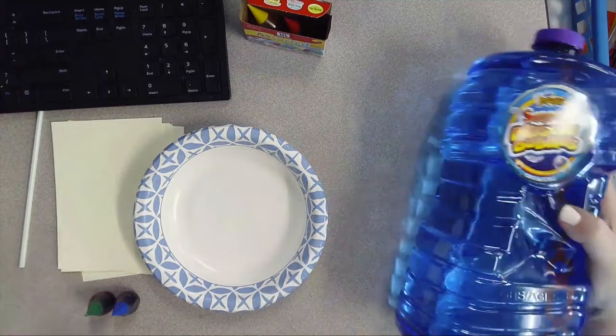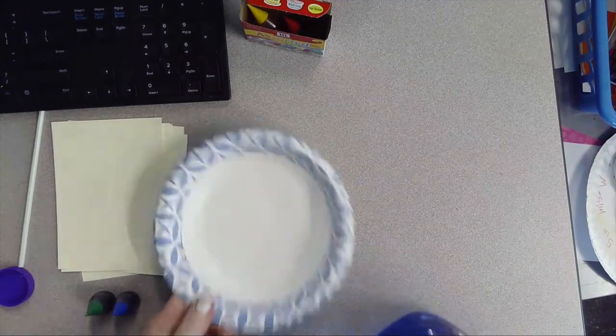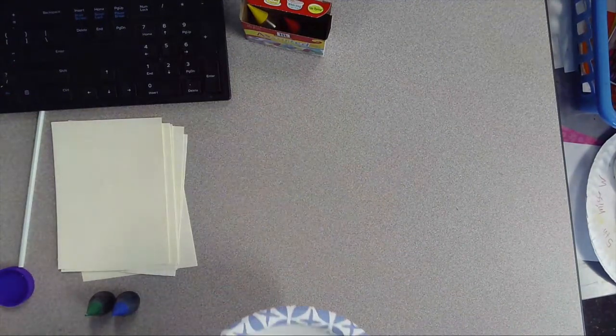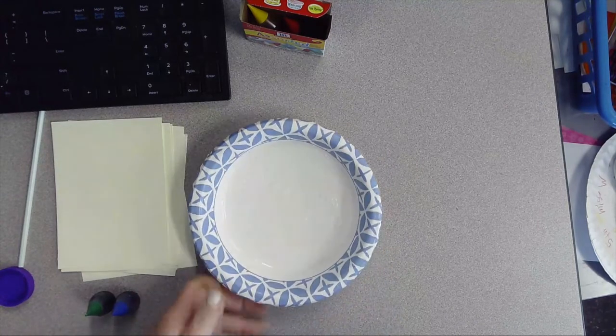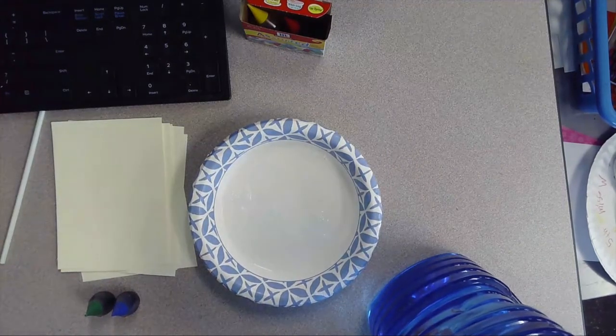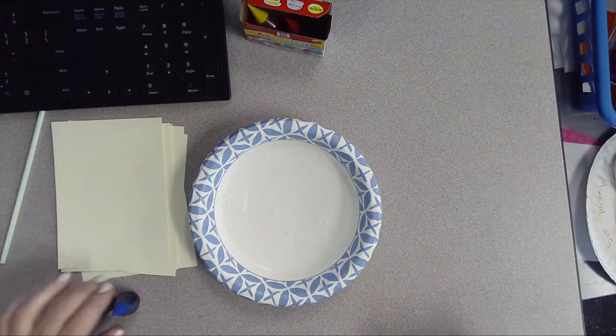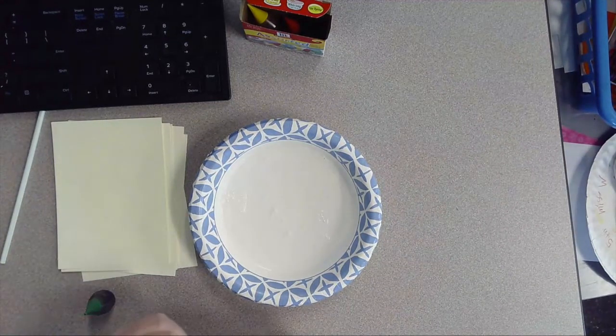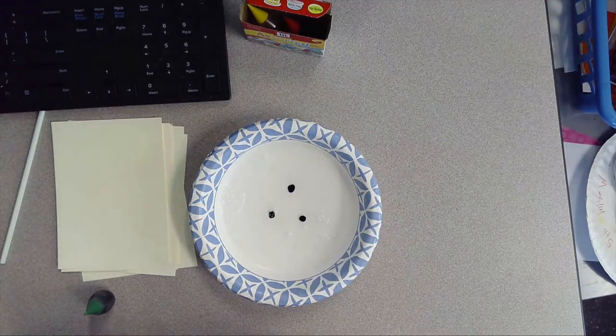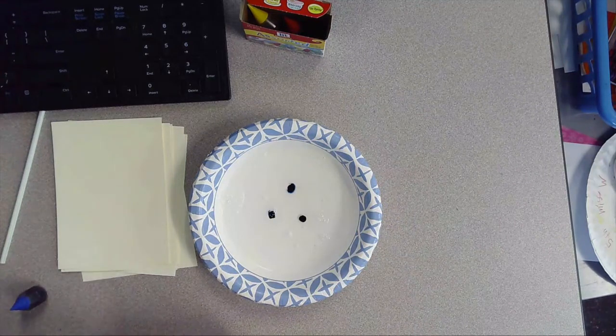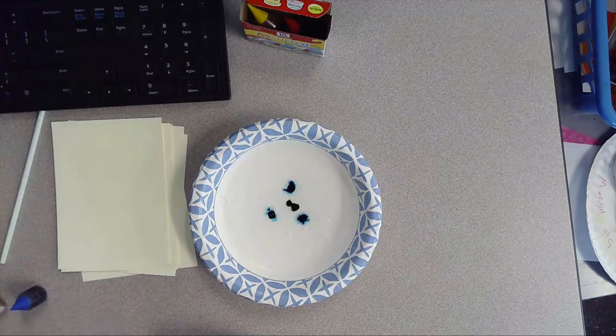I'm going to take some bubbles, and I have a giant jug. I'm going to pour some bubble mix into my bowl, and then I'm going to mix in a little food coloring to make them colorful.